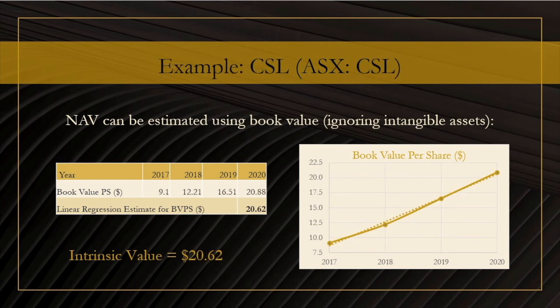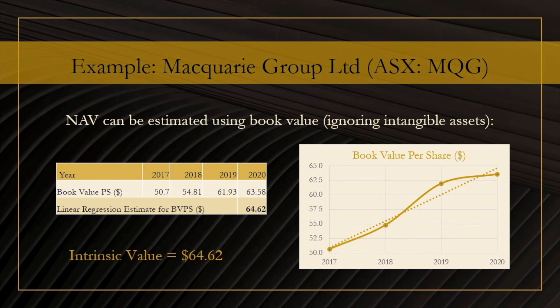Let us now look at a few other examples. Firstly, the biotech company CSL — using the same approach, we get an intrinsic value of $20.62 per share. Finally, looking at the Macquarie Group, ticker MQG, we get the company's intrinsic value to be $64.62 per share. Compared to the current share prices of these three companies, we see that our estimates of intrinsic value are very low, far below the current share prices provided by the stock market.